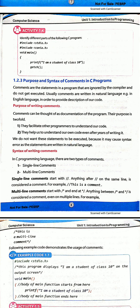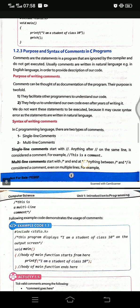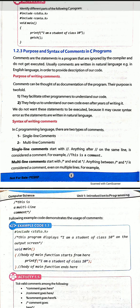Comments exist in high-level languages. Each language has a different syntax for writing comments, though mostly they are the same — for example, C and C++ have the same syntax. Java has a slightly different syntax for writing comments, and that is why there is a little bit of difference between them.